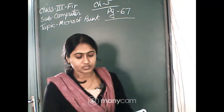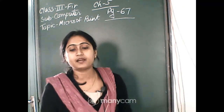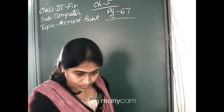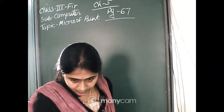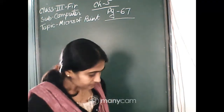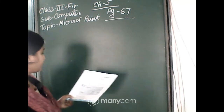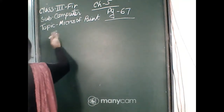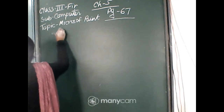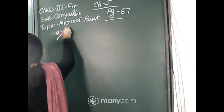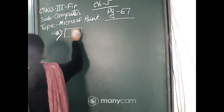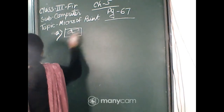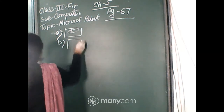Today I will first check 'Match the tools with their functions,' and then discuss the rest of the chapter. Please take out your book and open page 67. Number A is the Pick Color tool, and number B is the Text tool.